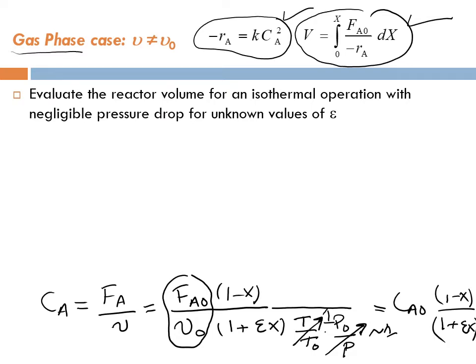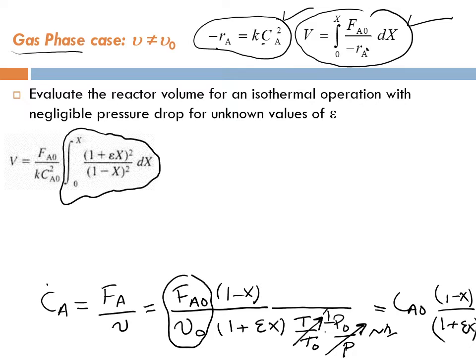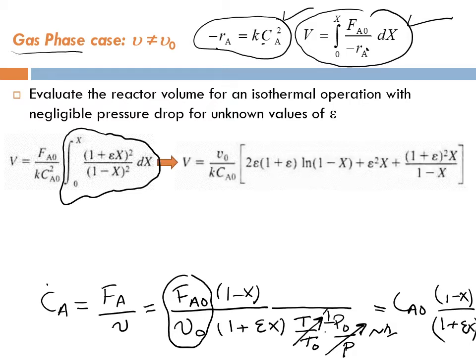We substitute for CA using this equation, then substitute into −rA to get the resulting expression. Now we integrate, and looking at the appendix — equation A7 — we get the result of the integration for the gas phase plug flow reactor volume.